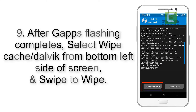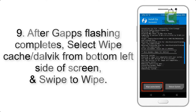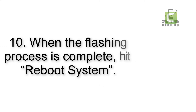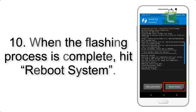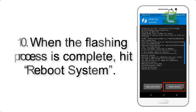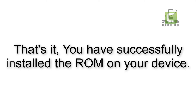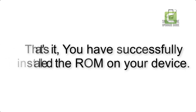Step 8: Flash the GApps zip package in the same manner. Step 9: After GApps flashing completes, select Wipe Cache and Dalvik from the bottom left side of the screen and swipe to wipe. Step 10: When the flashing process is complete, hit Reboot System. That's it — you have successfully installed the ROM on your device.